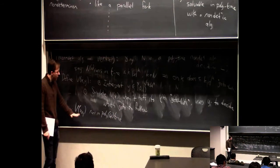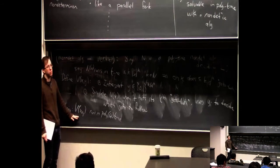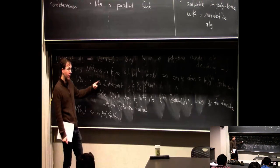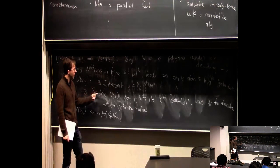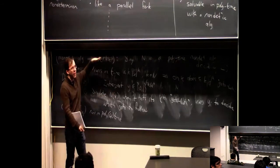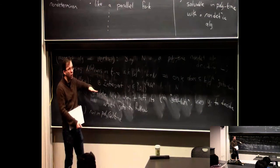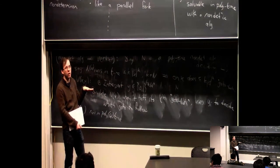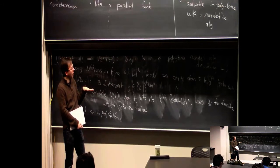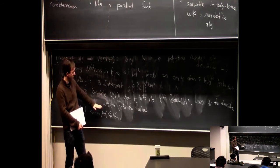Part 1: V(x, y) runs in poly(|x|) time. That's checked. The main claim is that V verifies L. I need to show x is in L if and only if there exists a y such that V(x, y) accepts. By definition of N deciding L in the weird non-deterministic notion: x is in L if and only if N overall accepts, which means there exists a branch or process of N(x)'s computation which locally accepts.